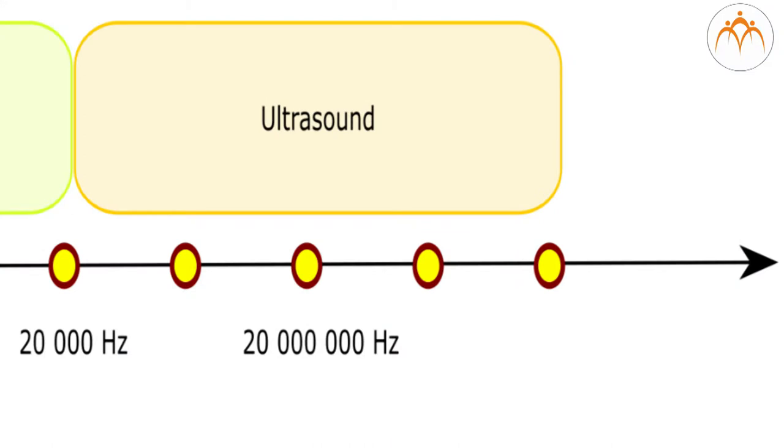Ultrasound is a sound having frequencies higher than 20,000 Hz, which is the upper audible limit of the human being. Ultrasound is not different from normal or audible sound in its physical properties, except that humans cannot hear it. This limit varies from person to person and is approximately 20 kHz or 20,000 Hz.